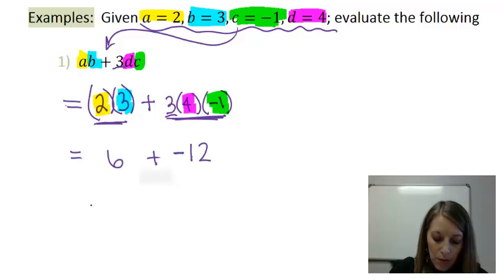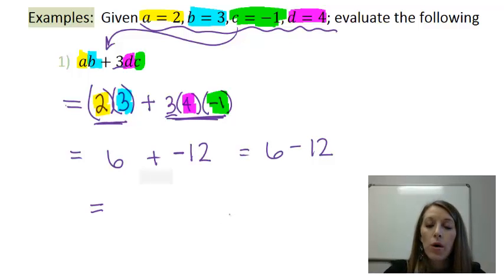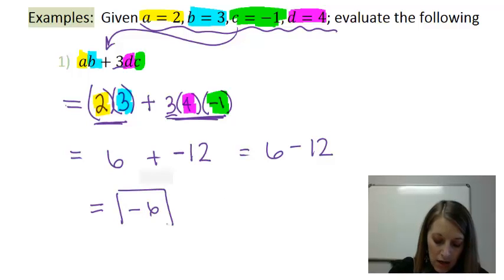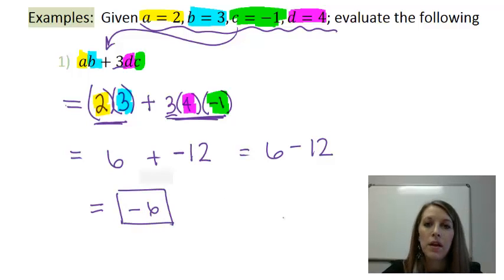My last operation is addition, or I could rewrite this as a subtraction problem, whatever is easiest for you. And 6 minus 12 gives me a negative 6. So my final answer to this example is negative 6.